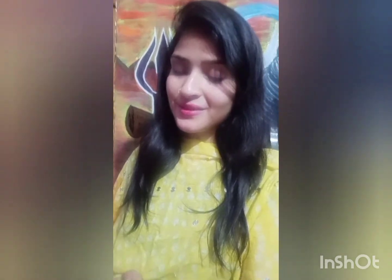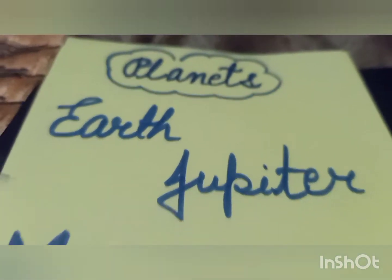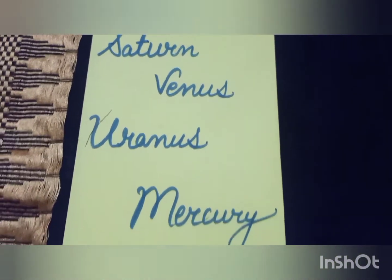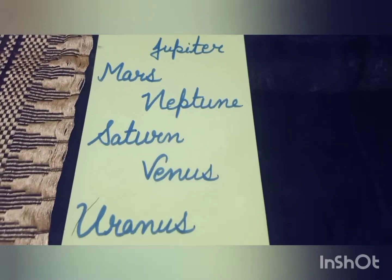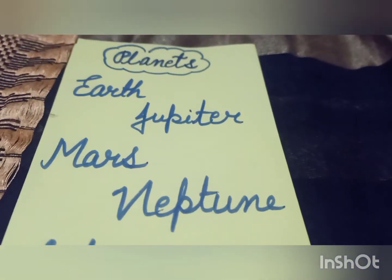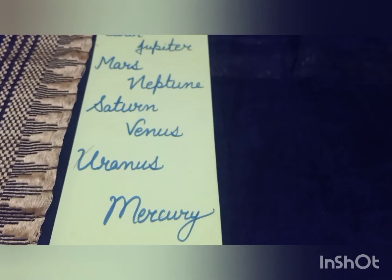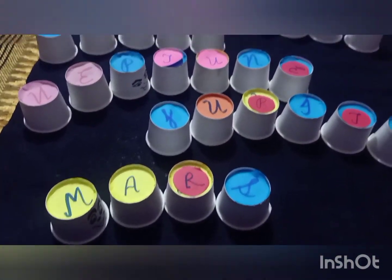So, we will arrange some names of planets and some actors' names according to the alphabetical order. Dear students, there are 8 planets in our solar system. In this question we have to arrange them in alphabetical order, but only 5 planets. So, I have written here 5 planet names. We will arrange them in the correct alphabetical order.